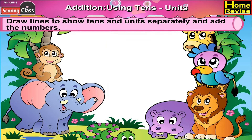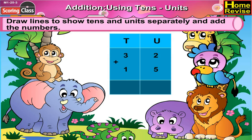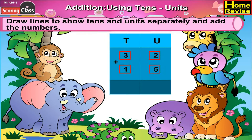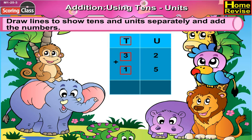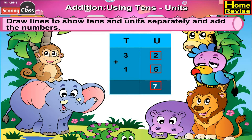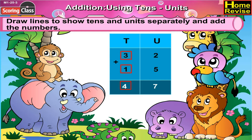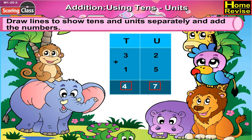Next is 32 plus 15. Let us draw a line between 32 and 15. Above 2 and 5 write units, above 3 and 1 write tenths. So 2 plus 5 is 7 and 3 plus 1 is 4. So 32 plus 15 is 47.